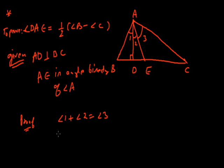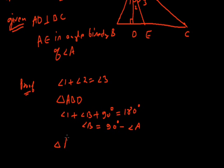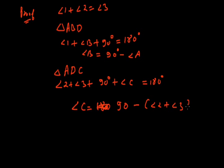In triangle ABD, applying the angle sum property: angle 1 plus angle B plus 90 degrees equals 180 degrees, so angle B equals 90 minus angle 1. In triangle ACD, applying the angle sum property: angle 2 plus angle 3 plus 90 plus angle C equals 180, giving angle C equals 90 minus (angle 2 plus angle 3).